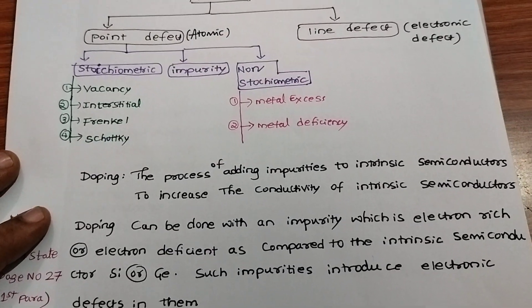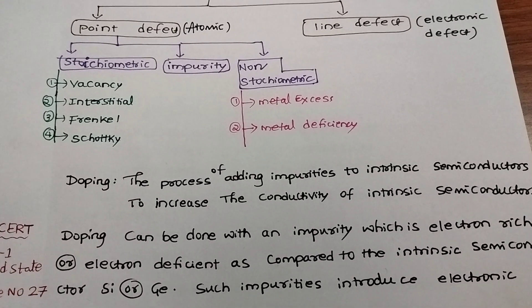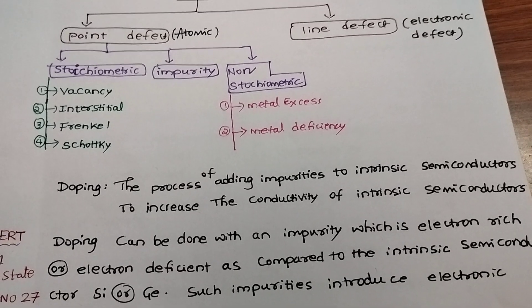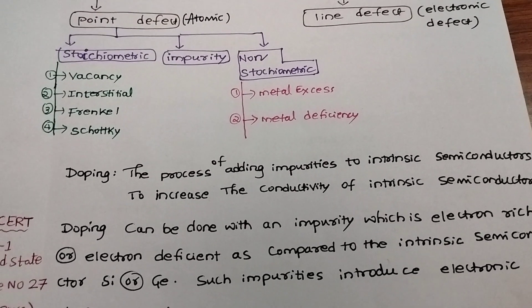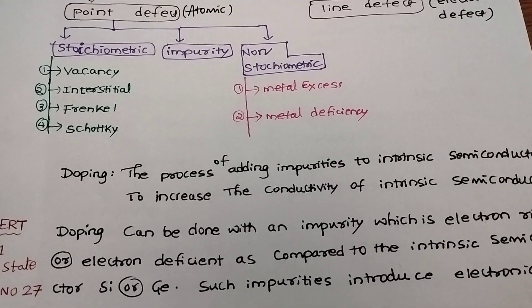For electronic defects, we first need to know what is doping. Doping is a process of adding impurities to intrinsic semiconductors to increase their conductivity.